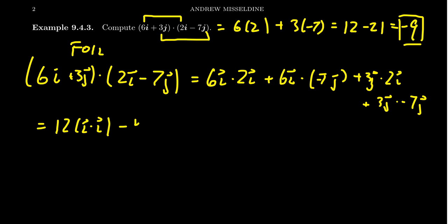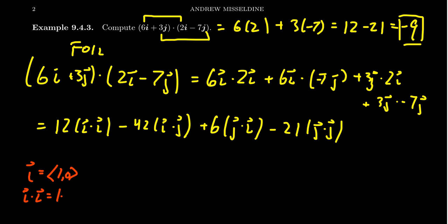You're going to get this -42 i dot j. 6 times 7 there. You're going to end up with this 3 times 2, 6, j dot i. And then finally you get this -21 j dot j. That's what that intermediate algebraic student would do. But there's a simplification that's important to notice here. If i is equal to (1,0), then what about i dot i? That would equal 1 times 1 plus 0 times 0, which would just give you a 1. So i dot i is just a 1. Similarly, if you think of j as (0,1), then you get the same thing when you take j dot j. You're going to get 0 dot 0 plus 1 dot 1, which is 1. So in the end, you end up with this -21. So i dot i and j dot j just disappear.